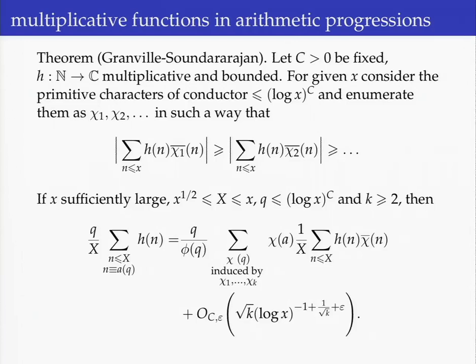We look at the mean value in an arithmetic progression a mod q, where q is bounded by log X to the C. One can rephrase this congruence condition as a character sum, but if q is as large as log X to the C, it might be difficult to deal with directly. What this result allows is to truncate the character sum and only look at the first k elements — those induced from characters in our sequence. By truncating in this way, we incur an error term of the form essentially log X to the power (-1 + 1/√k).